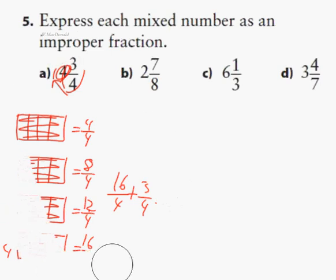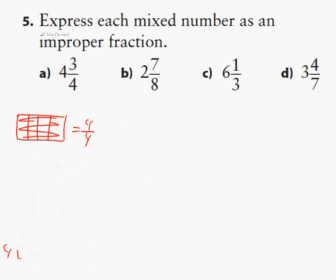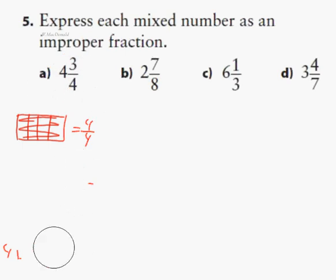There is an easier way to do this: simply take your denominator, 4, and multiply it by the whole number. That gives you 16 quarters, plus an additional 3 quarters, giving the same answer: 19 quarters. Using this algorithm for the next one — 2 times 8 is 16, plus 7 is 23, so the answer is 23 eighths.